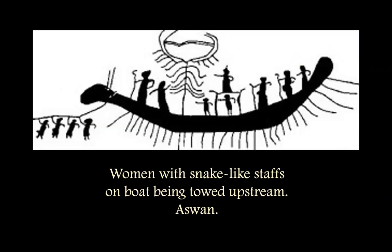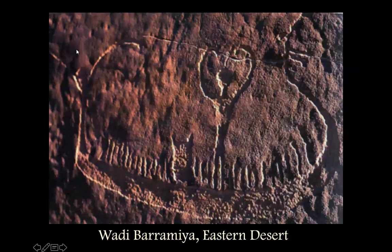This time there are multiple women, and three of them are holding serpentine staves in their hands. Others are raising their arms ceremonially. The standard is present — a kind of horned structure — and again there's a group of people hauling the boat up the river. These are all pretty much in the Nubian region, or in the case of the petroglyphs, the eastern desert going out from the direction of Luxor and Thebes toward the Red Sea area.